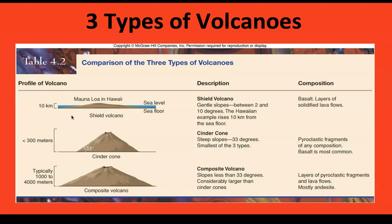Your shield volcanoes tend to be basaltic — some of you have met basalt in lab already. Composites tend to be made of andesite: A-N-D-E-S-I-T-E, andesite. I'm not going to have you worry about a rock type for cinder cones because it could be anything. But most shield volcanoes are basaltic, most composite volcanoes are andesitic. Those who've had lab already know that says something about the chemistry of the magma and lava that makes up the volcano.